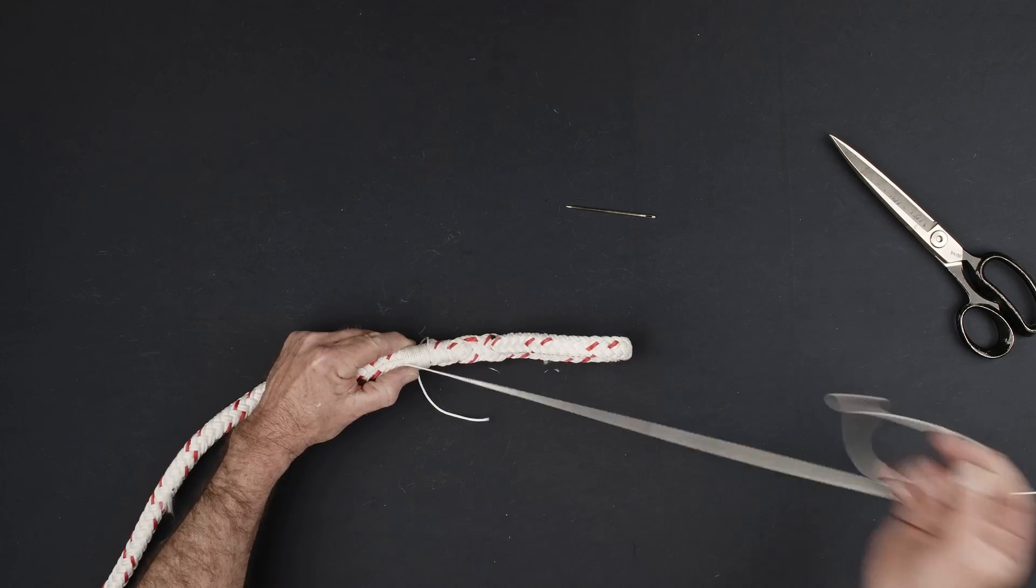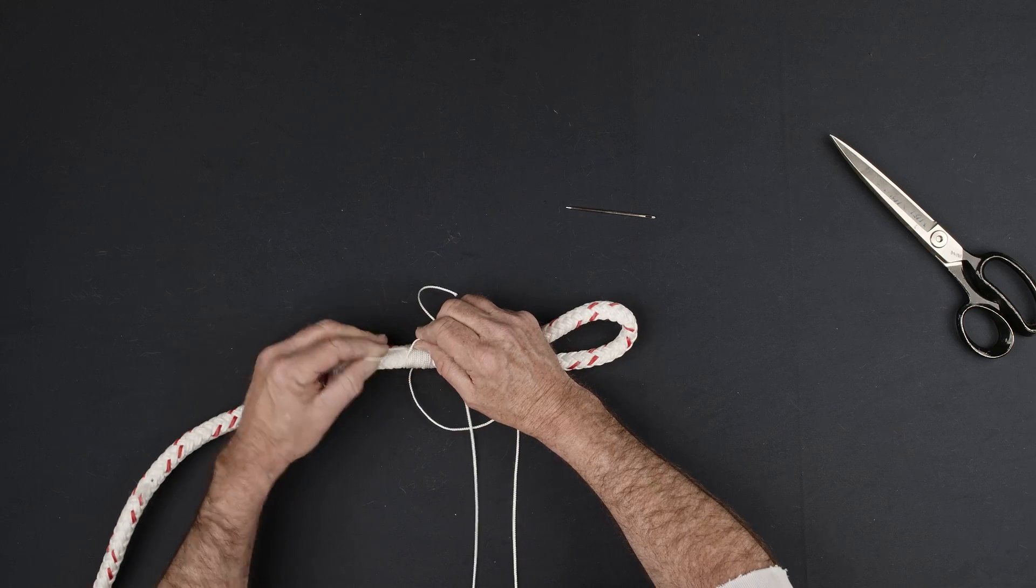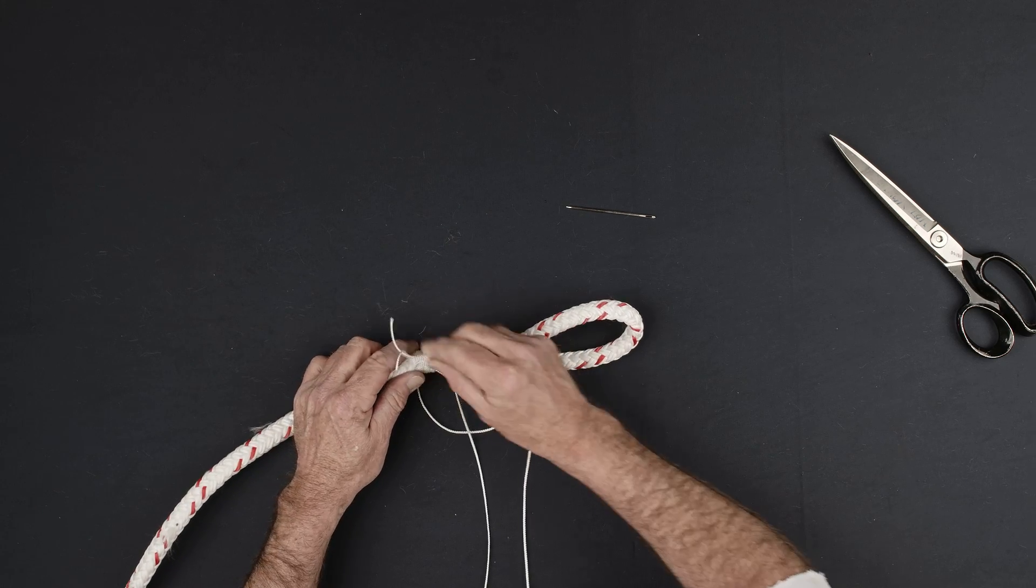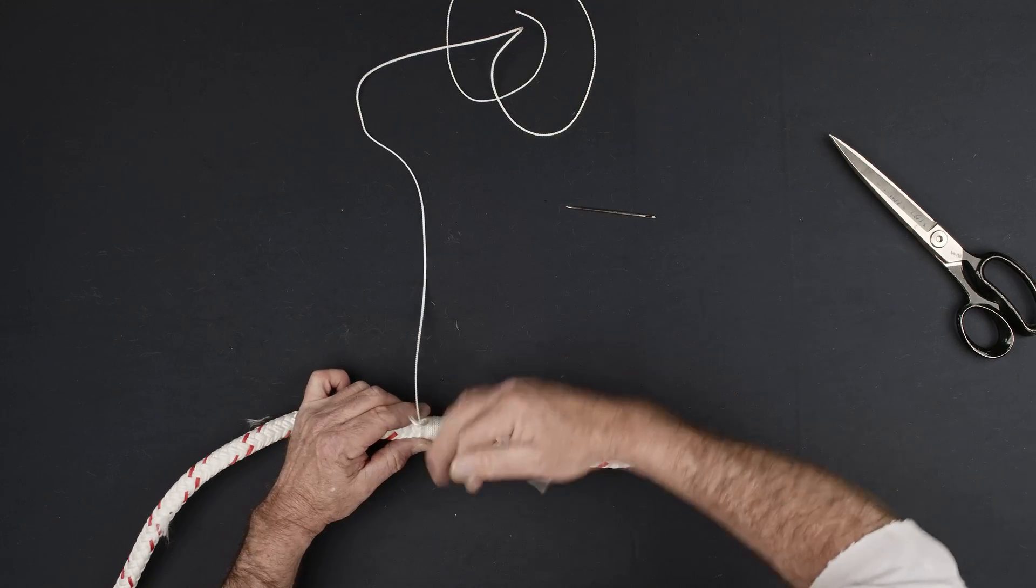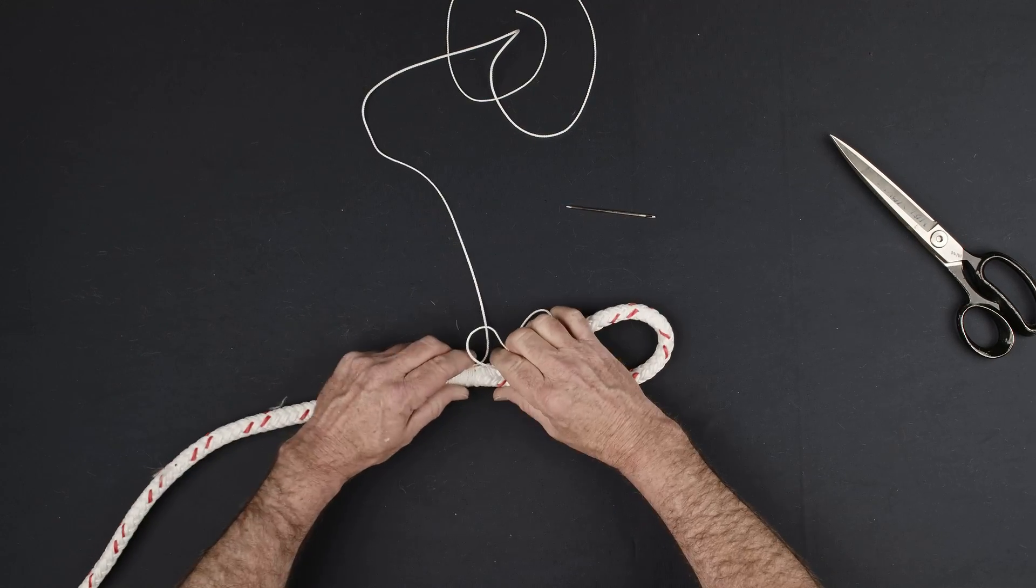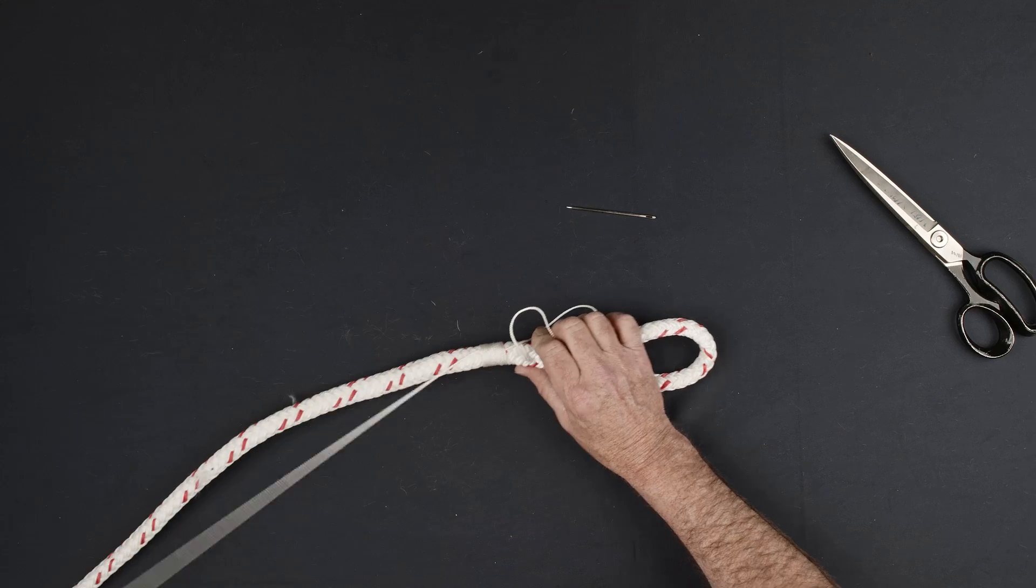Cut the twine long enough to complete the stitching. Pass the long end of the twine through the small loop formed at the beginning of the whipping. Pull the entire length of the twine through the loop until it is tight. Cinch the whipping by pulling the short tail and burying the loop beneath the wraps of the whipping.